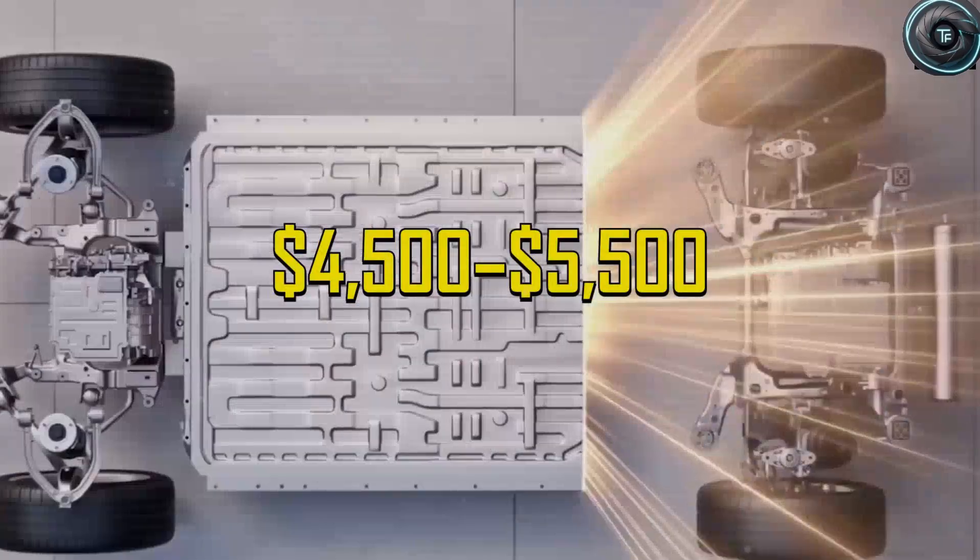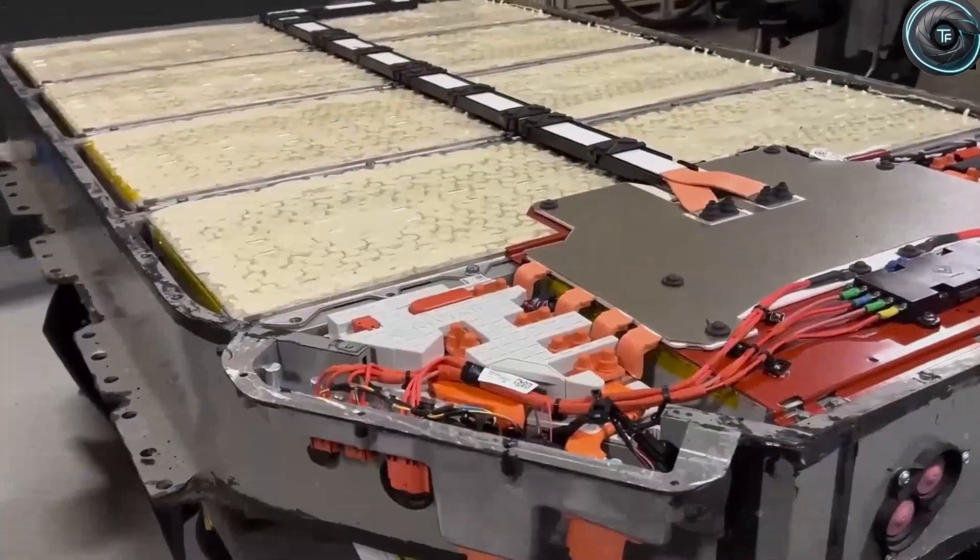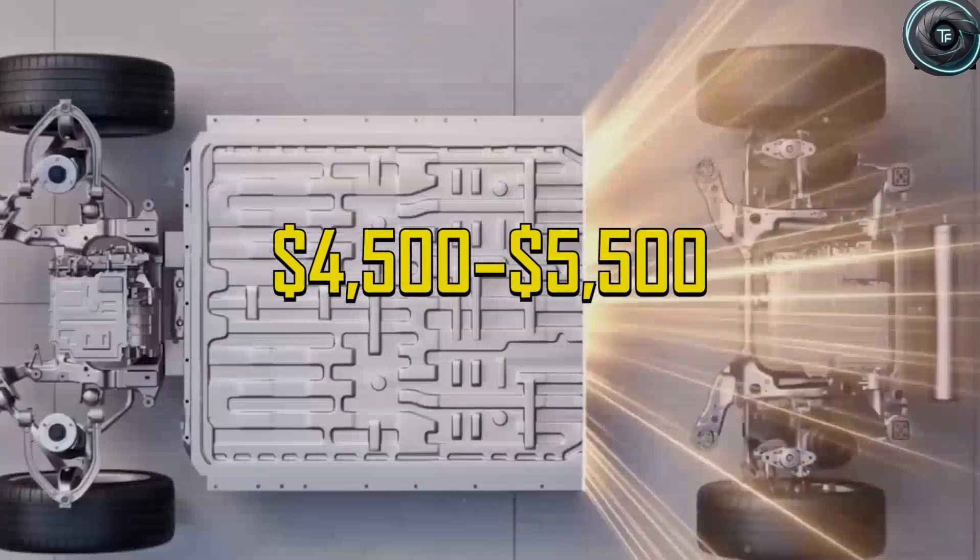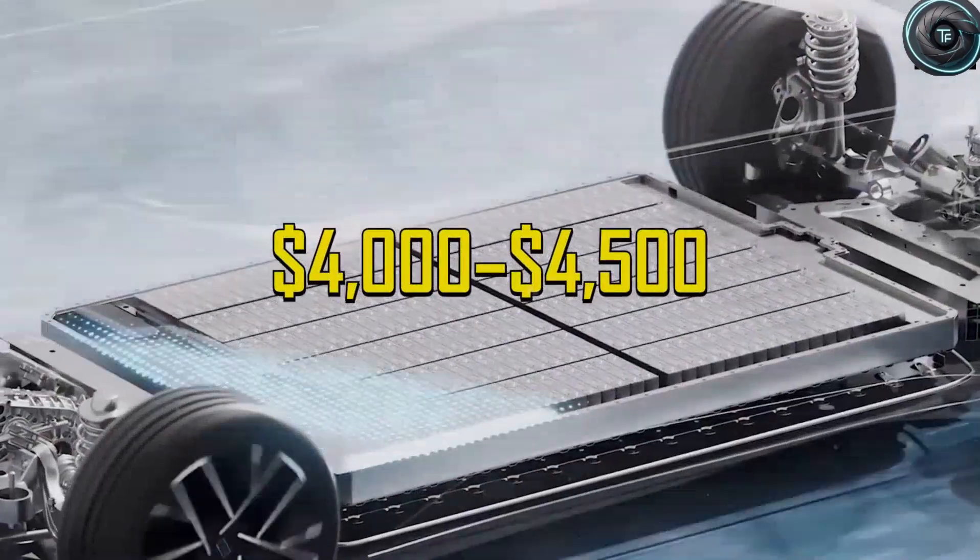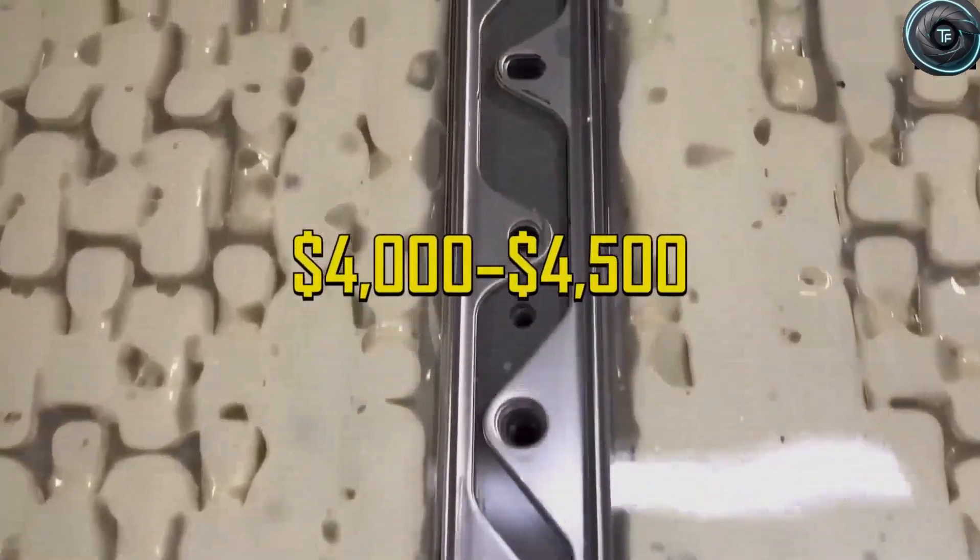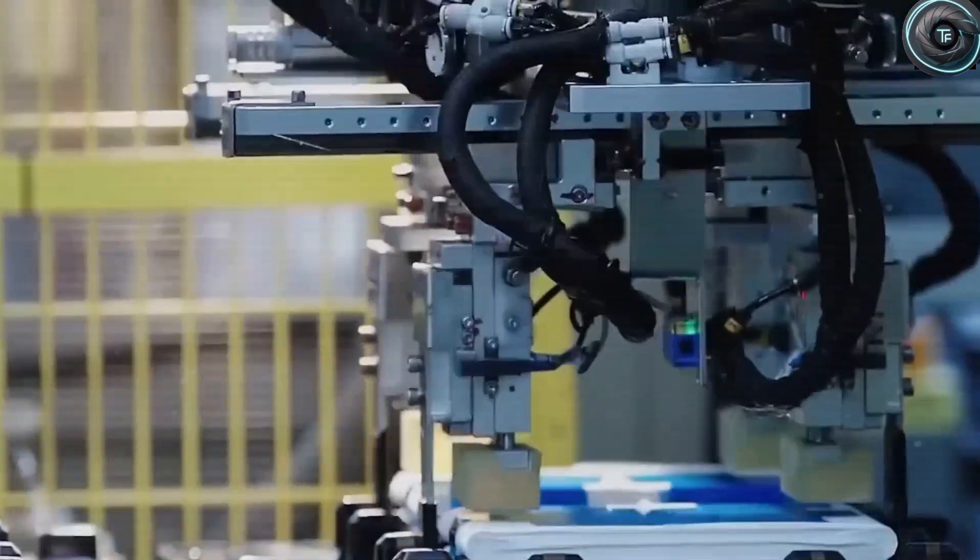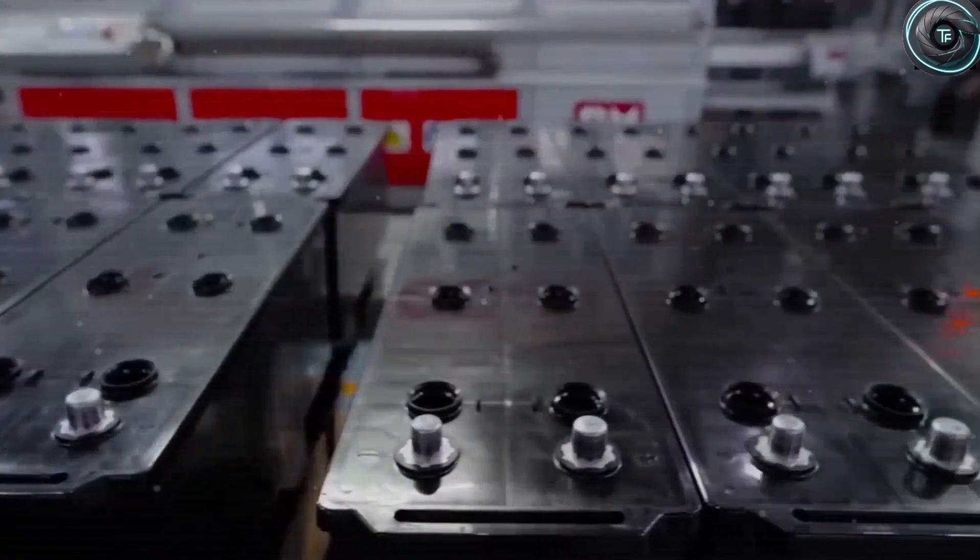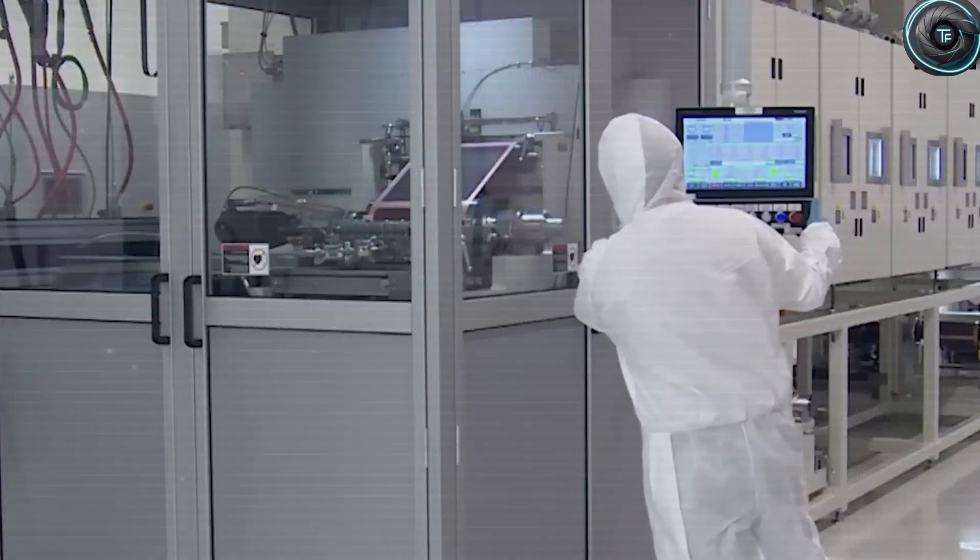So what does the future hold for sodium-ion batteries? Looking ahead, this technology is shaping up to be a central pillar of Tesla's EV strategy. According to insider projections, Tesla plans to scale production of 60 kWh sodium-ion cells at both Fremont and possibly Giga Shanghai, aiming for tens of thousands of units per month by late 2026.